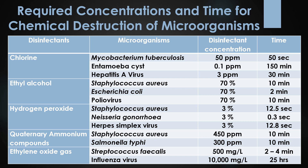The next disinfectant is hydrogen peroxide. 3% hydrogen peroxide is required for the destruction of Staphylococcus aureus, Neisseria gonorrhoeae, and Herpes simplex virus. The required times are 12.5 seconds for Staphylococcus aureus, 0.3 seconds for Neisseria gonorrhoeae, and 1.8 seconds for Herpes simplex virus.